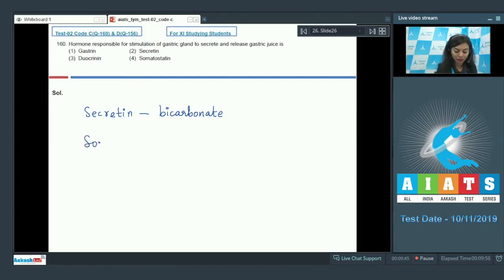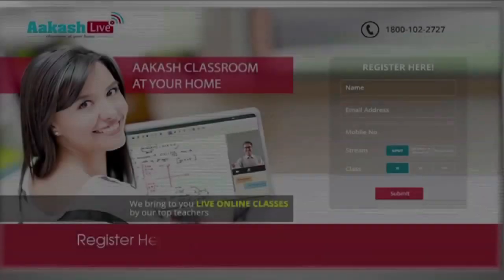Somatostatin suppresses the release of hormones from the digestive tract. The right option is option number 1, gastrin.